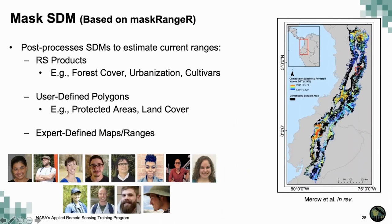The first is MaskRanger, created to do post-processing of SDMs. In particular, it allows the use of remote sensing products like forest cover, cultivars, urbanization, and protected areas to both crop your models and to understand what percentage of a species' range is in a certain protected area or land cover type. It also allows experts to correct the maps if they know the species is present in another area or not present in one of the areas being modeled.